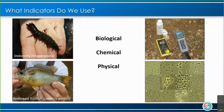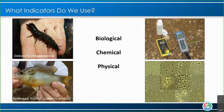When we monitor, what indicators do we use? For my job, we look at biological, chemical, and physical indicators. Some native Fairfax County critters include the red-breast sunfish and the Dobson fly. We use a water chemistry meter to measure pH, temperature, dissolved oxygen, and conductivity — which is basically measuring dissolved ions within the water. We also do bacteria and E. coli monitoring.